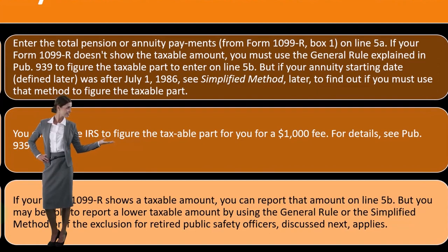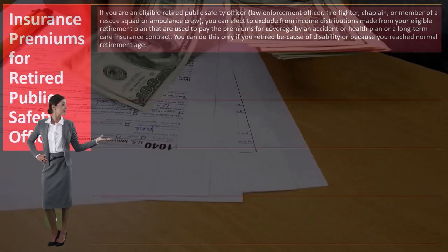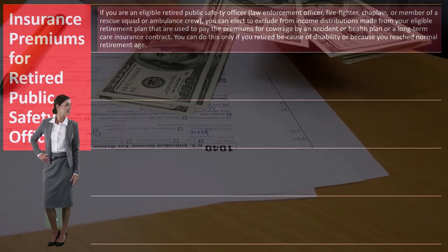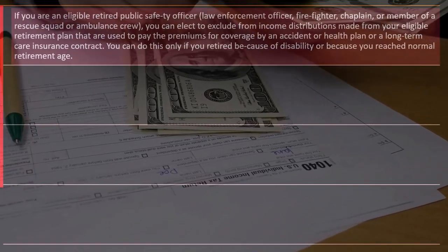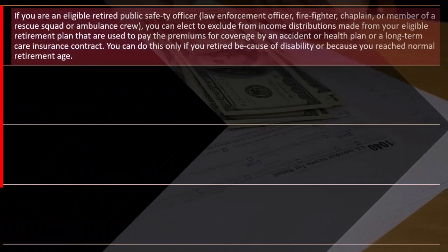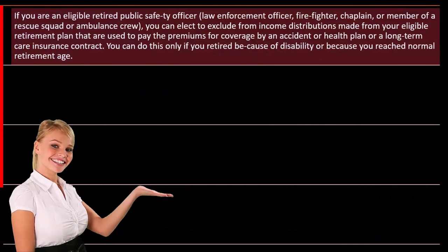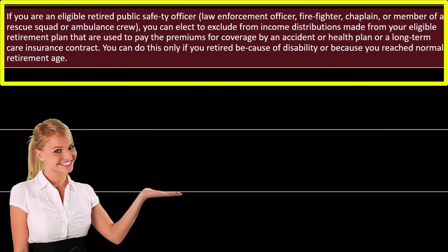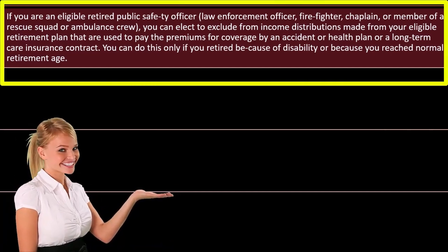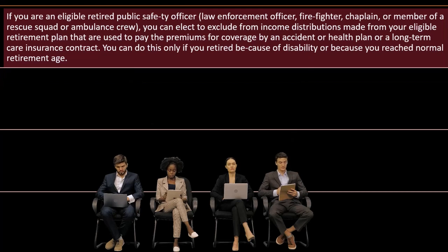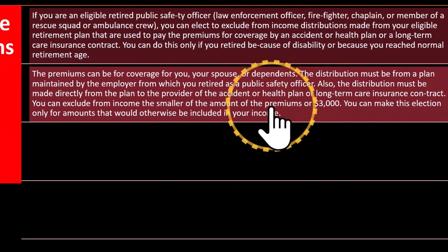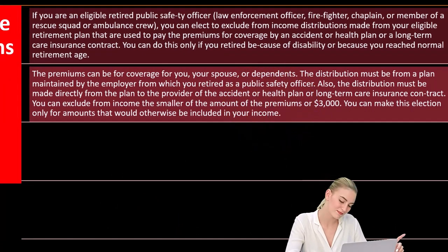There is also a special exclusion for retired public safety officers. If you are an eligible retired public safety officer — law enforcement officer, firefighter, chaplain, or member of a rescue squad or ambulance crew — you can elect to exclude from income distributions made from your eligible retirement plan that are used to pay premiums for an accident or health plan or long-term care insurance contract. You can do this only if you retired because of disability or because you reached normal retirement age.